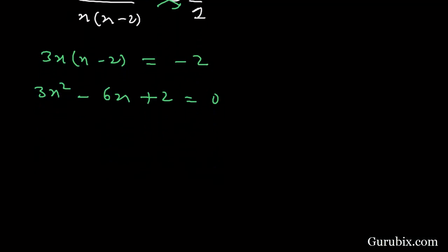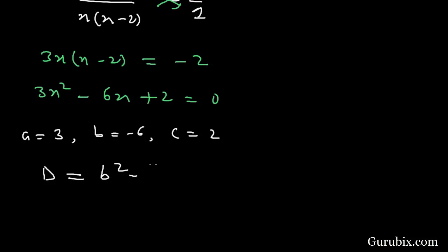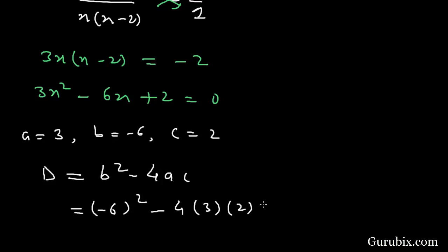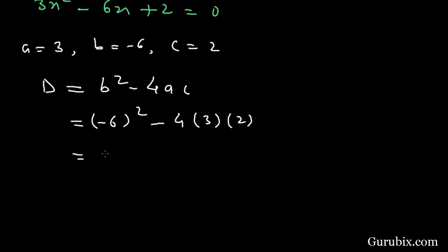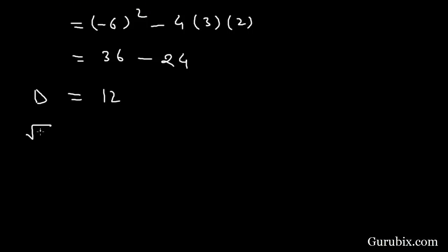Now we shall apply the quadratic formula. We pick the coefficient of x squared (a = 3), the coefficient of x (b = -6), and the constant term (c = 2). The discriminant D = b squared minus 4ac = (-6) squared minus 4 times 3 times 2 = 36 minus 24 = 12.